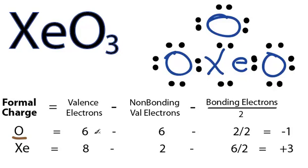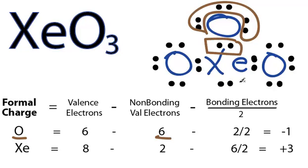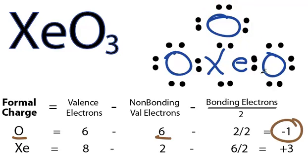On the periodic table, 6 valence electrons minus non-bonding, that's these ones right here. We have 6 of those. And then we have 2 bonding, we divide that by 2. 6 minus 6 minus 1 is negative 1. So we can put a negative 1 as the formal charge on the oxygens.